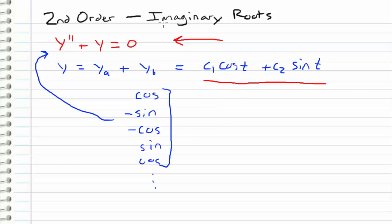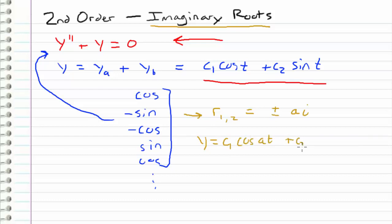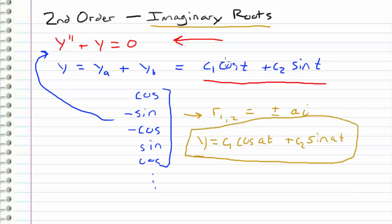In general, for pure imaginary roots r1 and r2 equal to plus or minus a times i, the general solution is c1 cosine of at plus c2 sine of at, assuming y is a function of t. In the example we just solved, the roots were plus or minus i, meaning a equals 1. Plugging in gives c1 cosine t plus c2 sine t, exactly what we obtained.